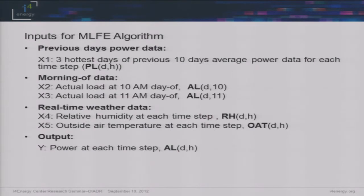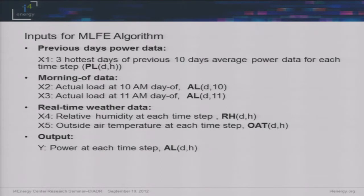Similarly to the BP3 method that LBNL used, we used the three hottest days of the previous 10 as an input. We also had two inputs from the morning of, similarly to the correction factor approach. We used some real-time weather data — relative humidity and outside air temperature at each step — and then we basically have an output of power. If we wanted to, we could actually use a weather forecast for humidity and outside air temperature looking ahead, though that adds some uncertainty, which is a trade-off.